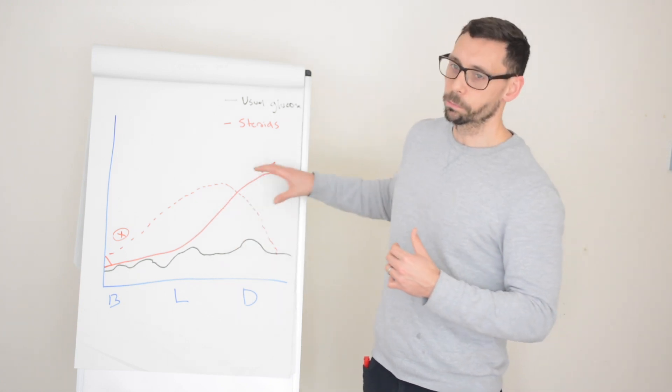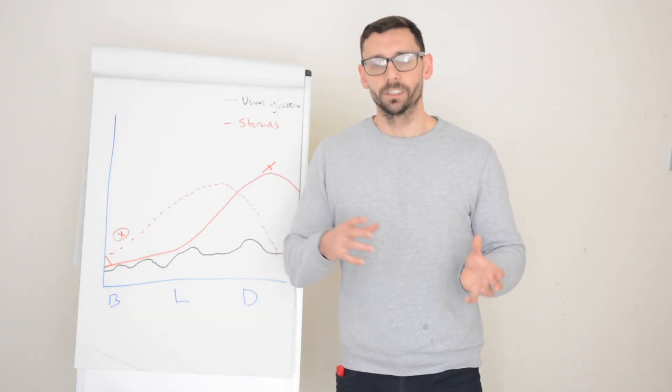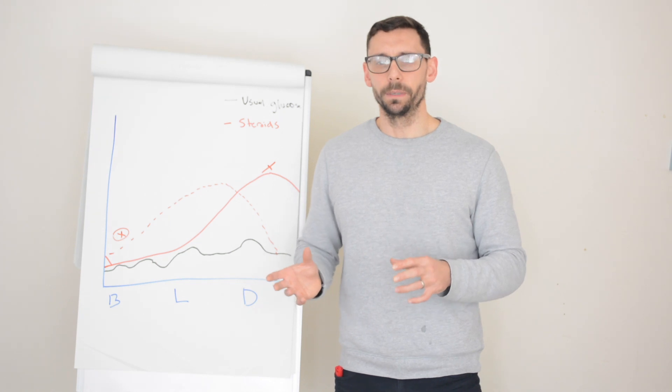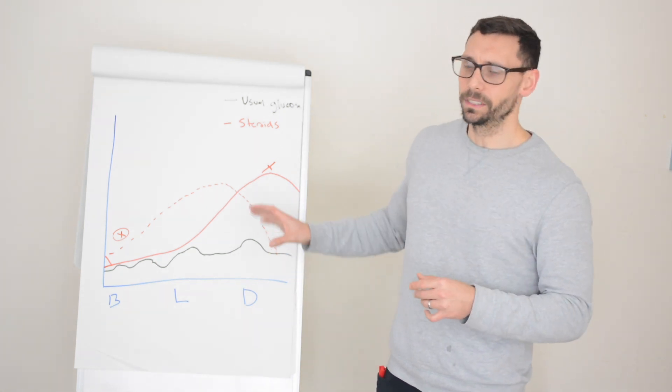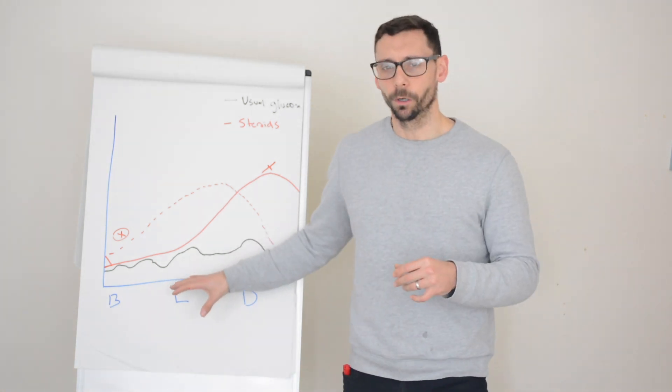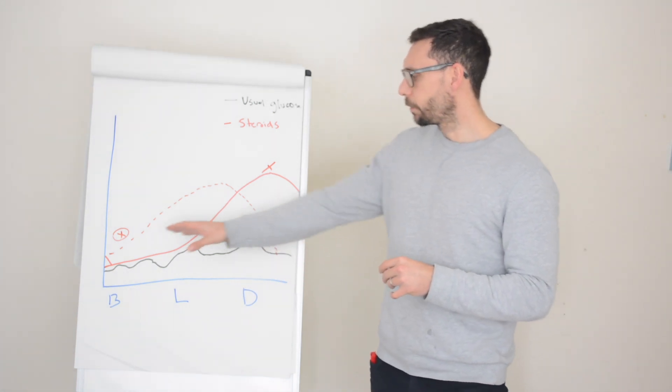It might make you pee, might make you thirsty and start to see those day-to-day effects of diabetes. If this is a chronic problem over the long term, then some of those long-term complications with diabetes can start to manifest, but typically this tends to be a bit more of an acute problem.